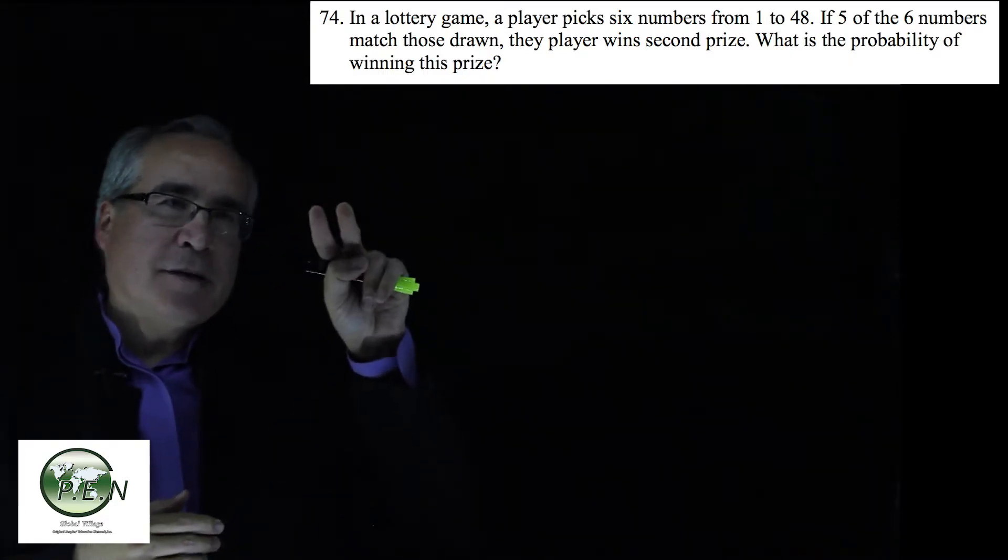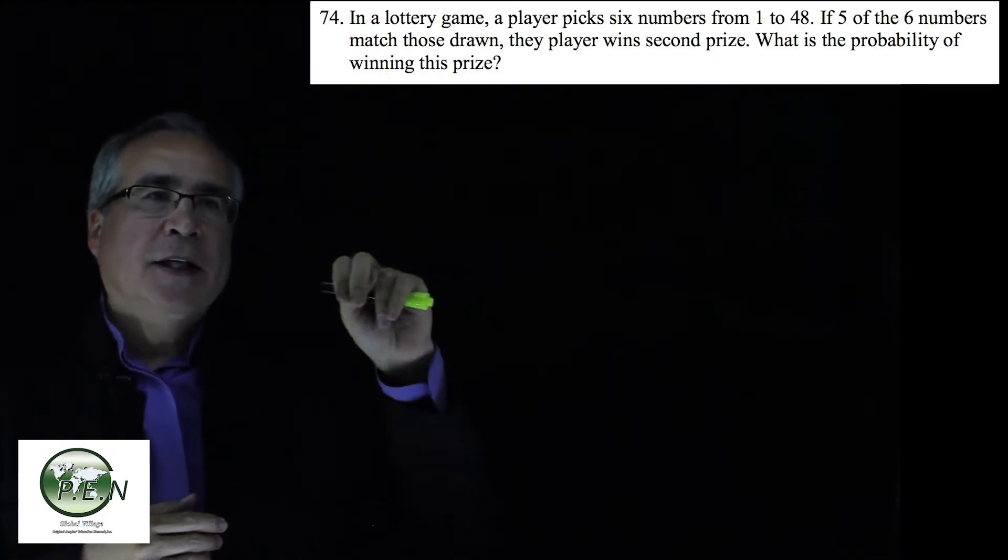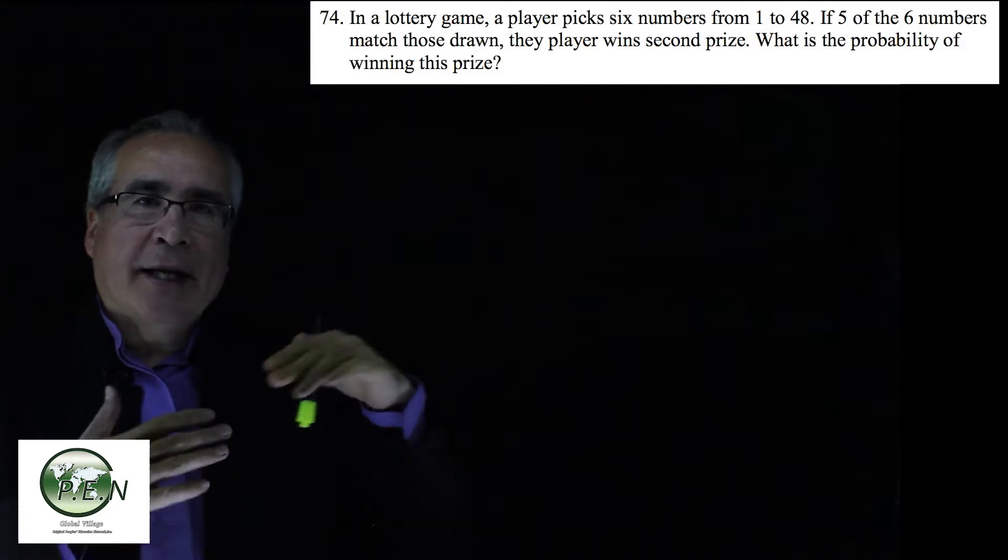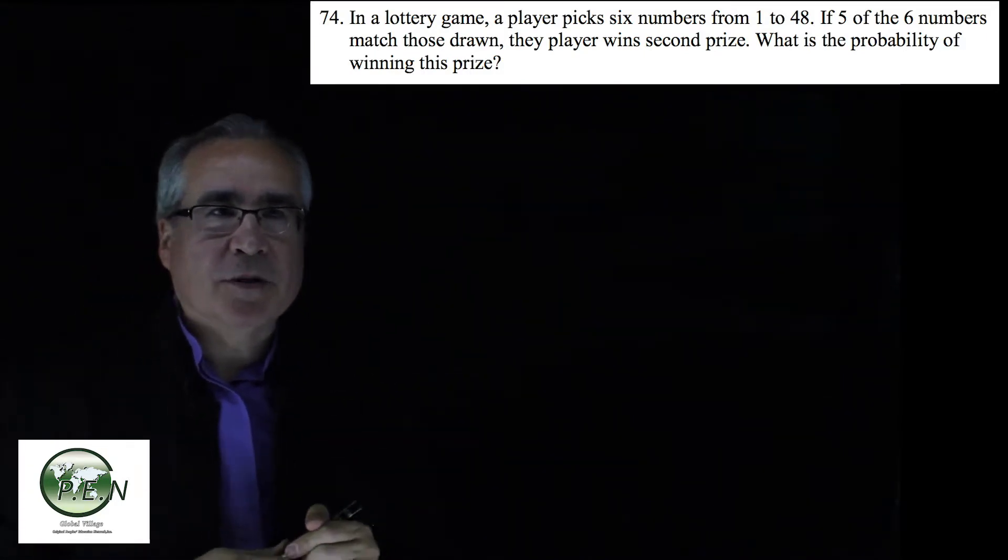So the way we're gonna do that is we're gonna count all the ways that we could match five out of six. And then we'll divide by the total ways that the six numbers could be chosen.